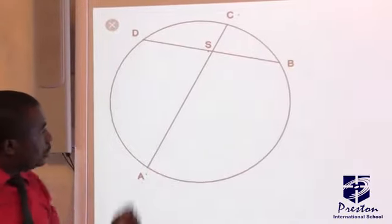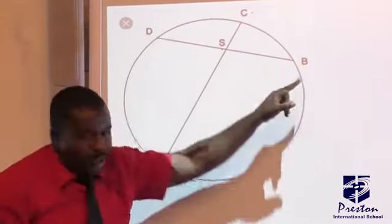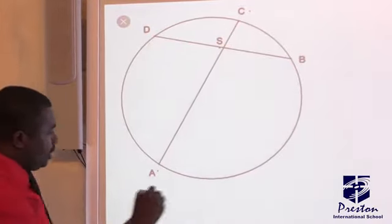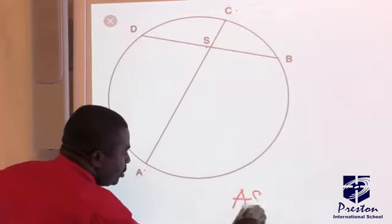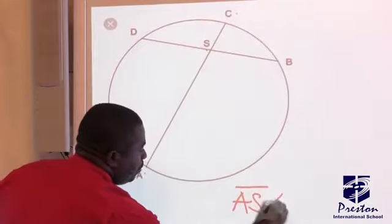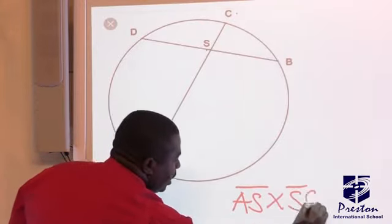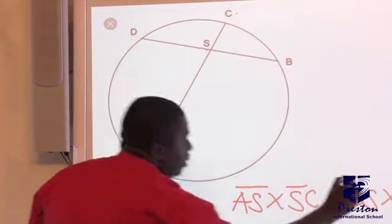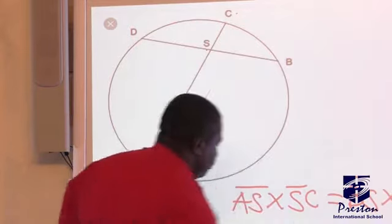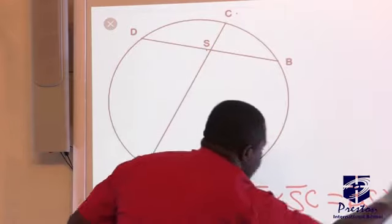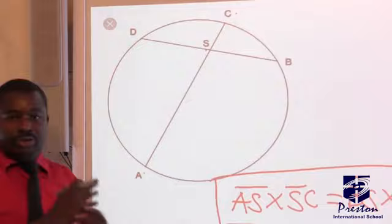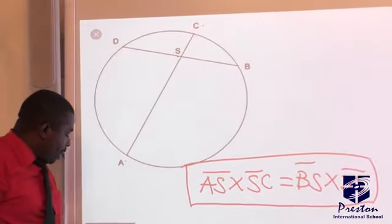Chord AC and chord DB. The two chords are intersecting at X. So the theorem is saying that AX, line AX, multiplied by line CX, equal to line BX, multiplied by line DX. This is what the theorem is saying. So let's move forward and see how we can use the two theorems to solve examples.